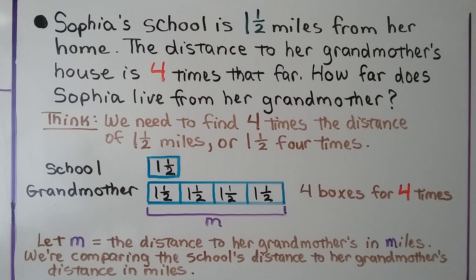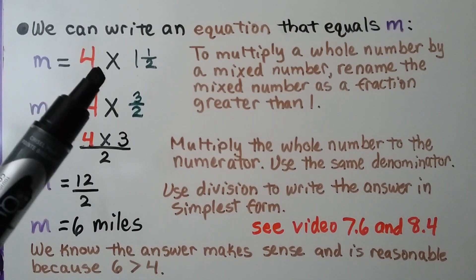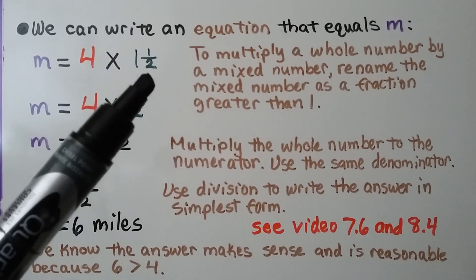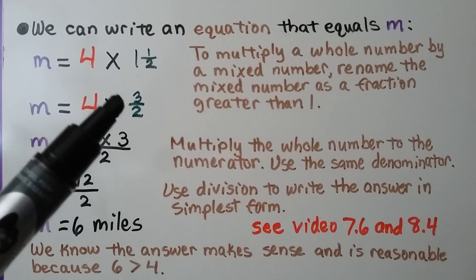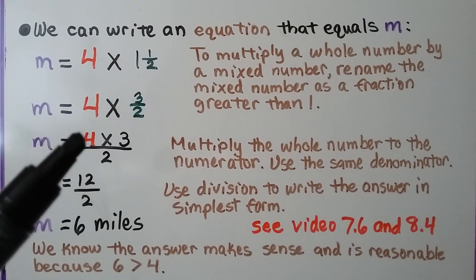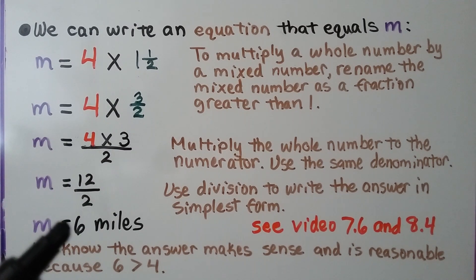We're comparing the school's distance to her grandmother's distance in miles. We can write an equation: m is equal to 4 times 1.5. To multiply a whole number by a mixed number, we rename the mixed number as a fraction greater than 1. We do 1 times the denominator 2 plus the numerator 1, giving us 3 halves. Now we multiply 4 times 3 halves by multiplying 4 to the numerator 3, written over denominator 2, giving us 12 halves. Then we use division: 12 divided by 2 equals 6. So m equals 6 miles — Sophia lives 6 miles from her grandmother.